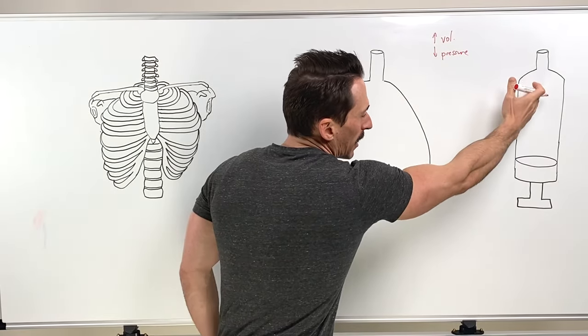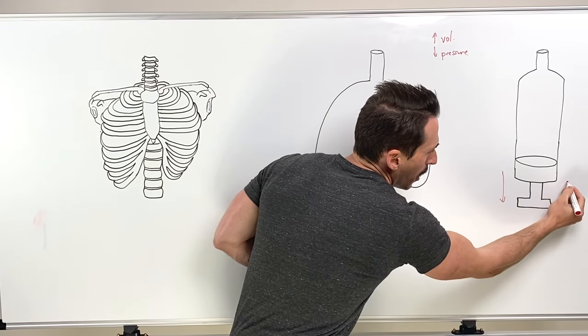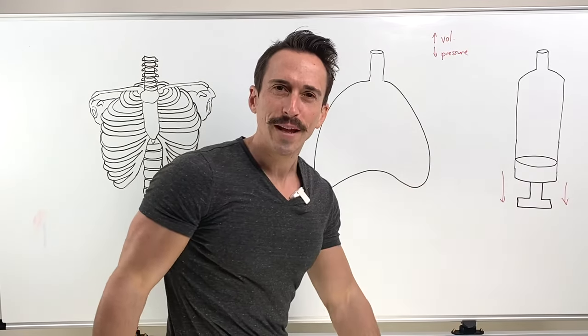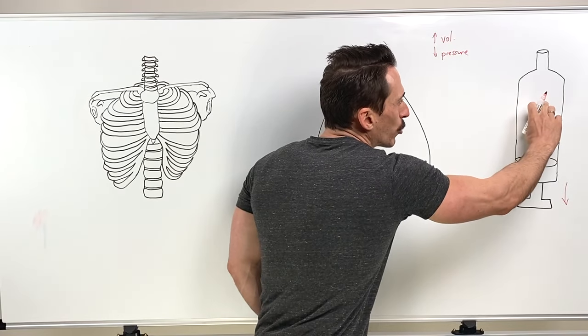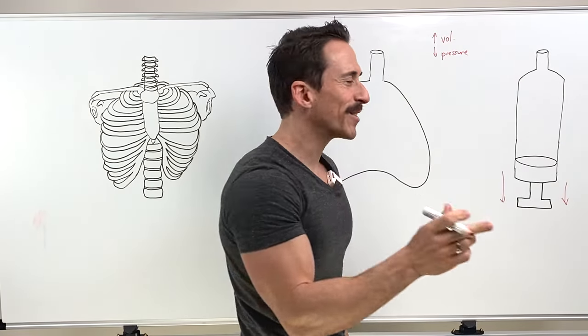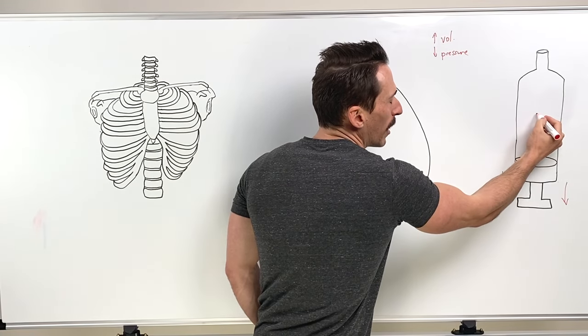So let's take a syringe for example. If we were to pull down on the plunger of that syringe, we increase the volume inside of that syringe. That means the pressure inside drops.